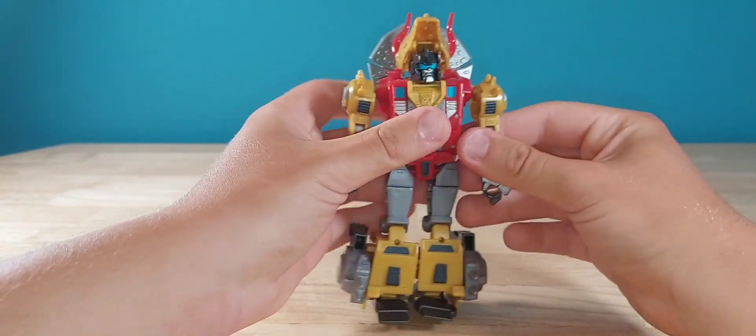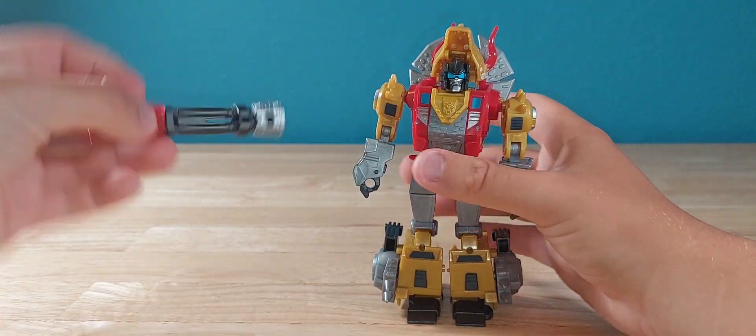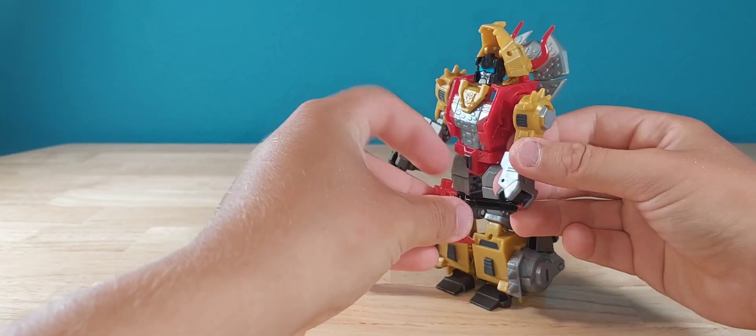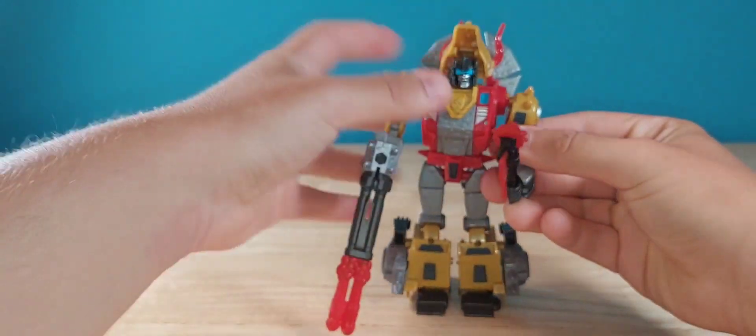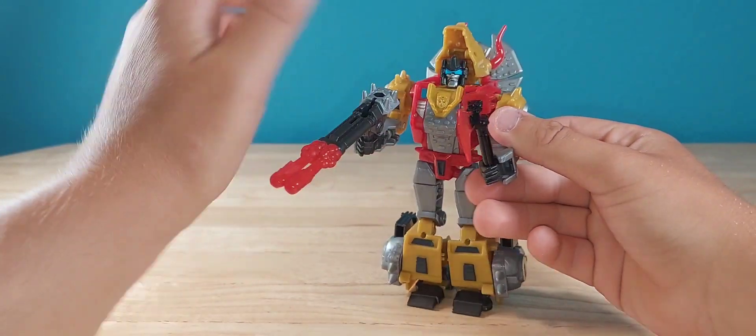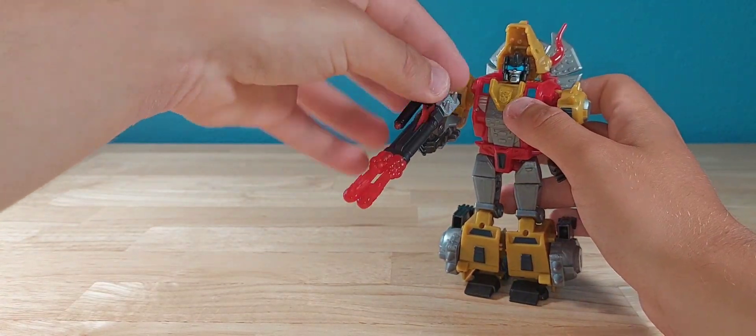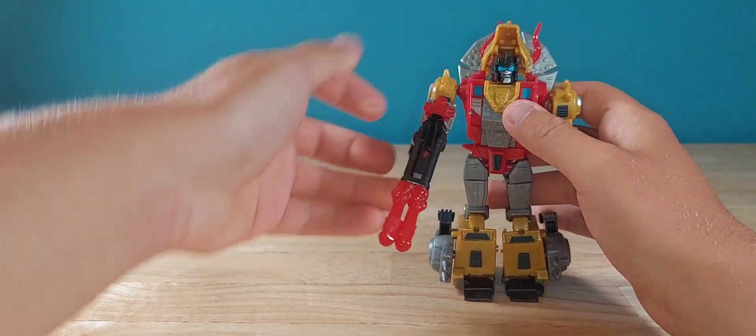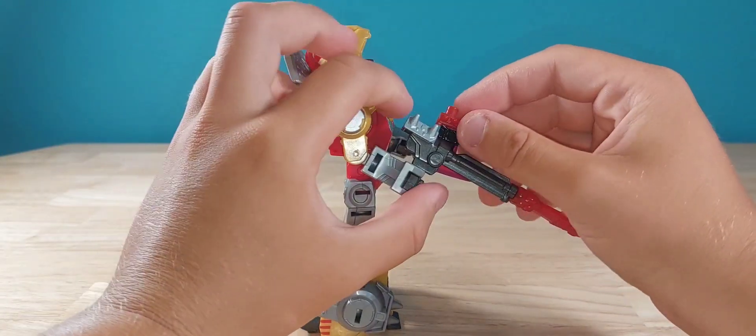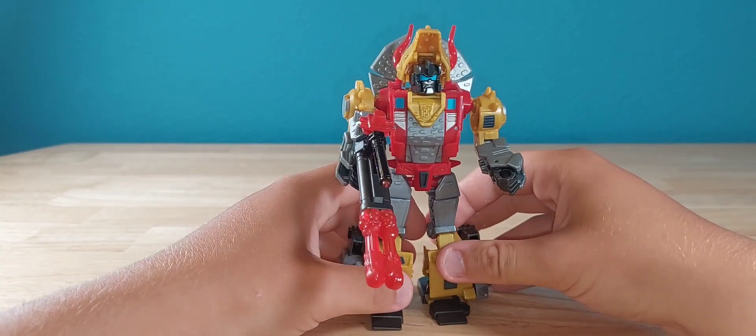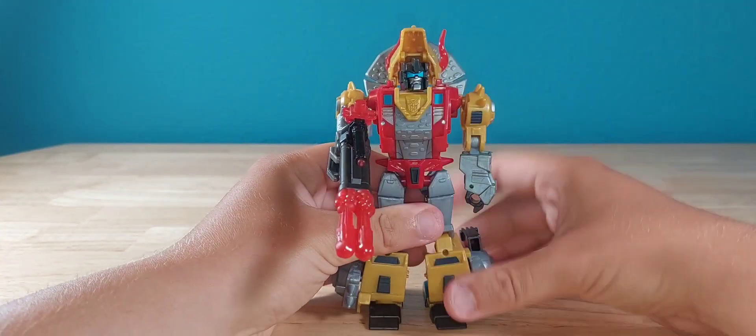Now he can hold the shotgun just fine, and the axe. There you go. Or if you wanted to, what I personally do is I just go ahead and tab that in and give him a shotgun axe.